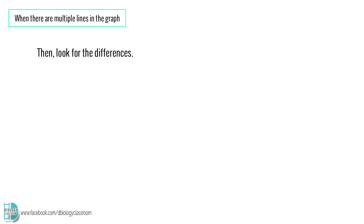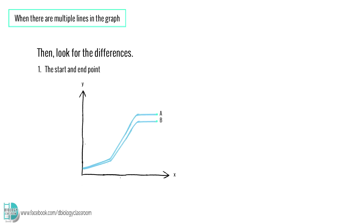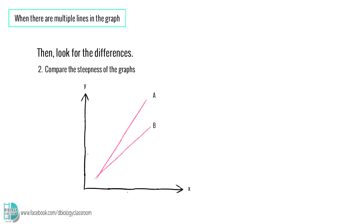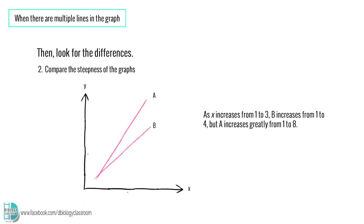Then you can start to look for the differences based on a few aspects. Number one, the start and end point — state which one is higher and quote in the data, and make some calculations on how much one is higher than the other. Number two, compare the steepness of the graph. If one is increasing more drastically than the other, mention that and quote in the data. For example, as x increases from 1 to 3, b increases from 1 to 4, but a increases greatly from 1 to 8.